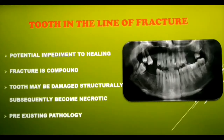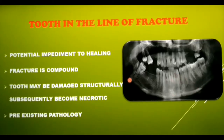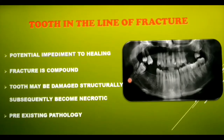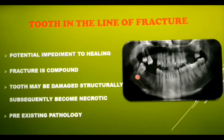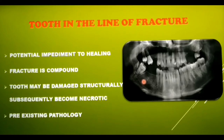Before moving on to treatment options, let us look at how to deal with a tooth within the fracture line. A tooth in the line of fracture is a potential impediment to fracture healing; it converts a simple fracture into a compound one by exposing the fracture to the oral cavity, making it a potential nidus of infection. The tooth may become damaged and subsequently necrotic. If there is a pre-existing pathology associated with the tooth, it can aggravate or invade the mandible. Indications for removal include longitudinal tooth fracture, subluxation or dislocation, periapical infection, infected fracture line, and acute pericoronitis.